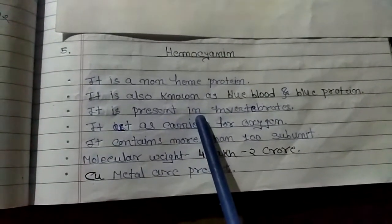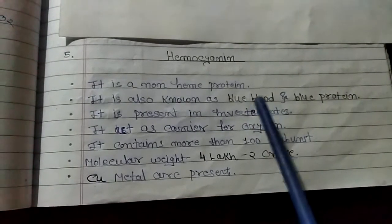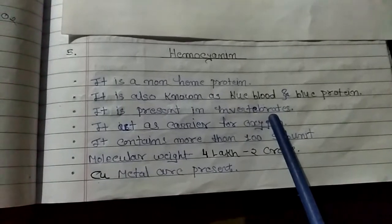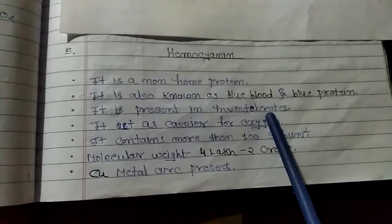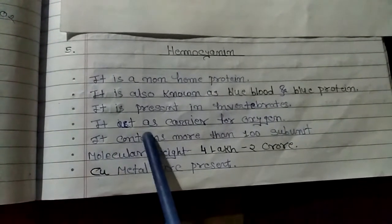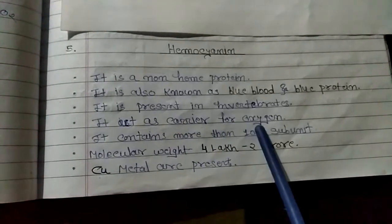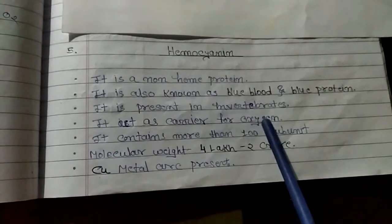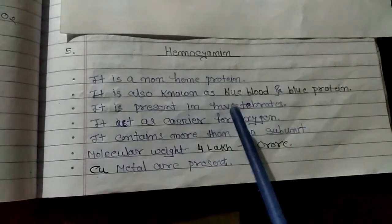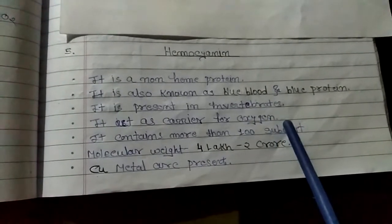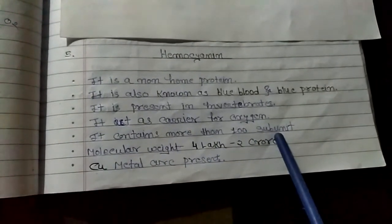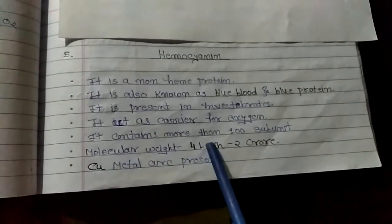It is present in invertebrates. Hemocyanin acts as carrier for oxygen. It can contain more than hundred subunits and has significant molecular weight.